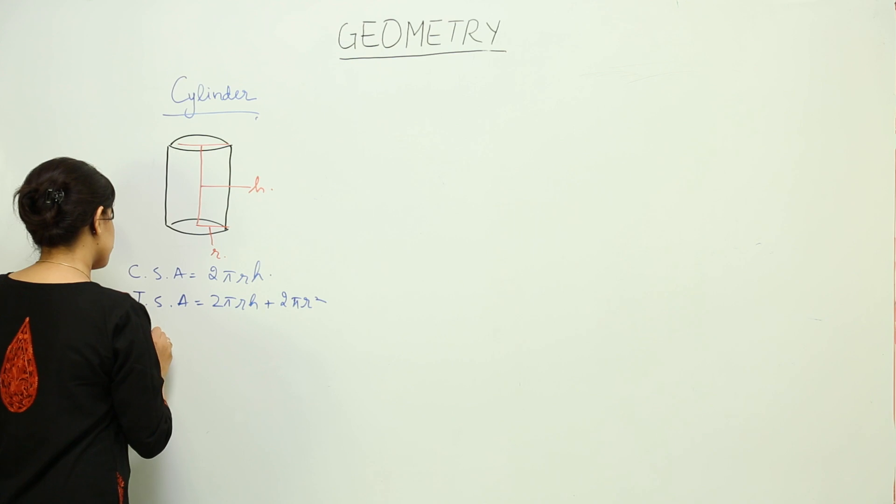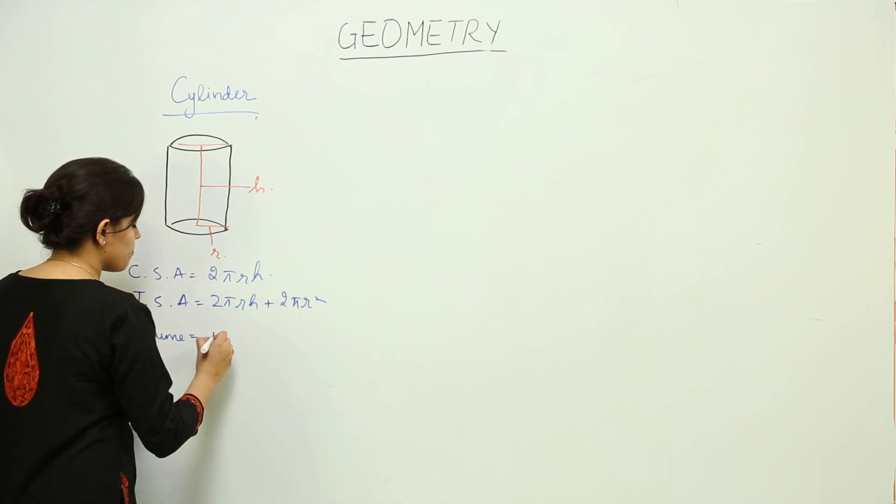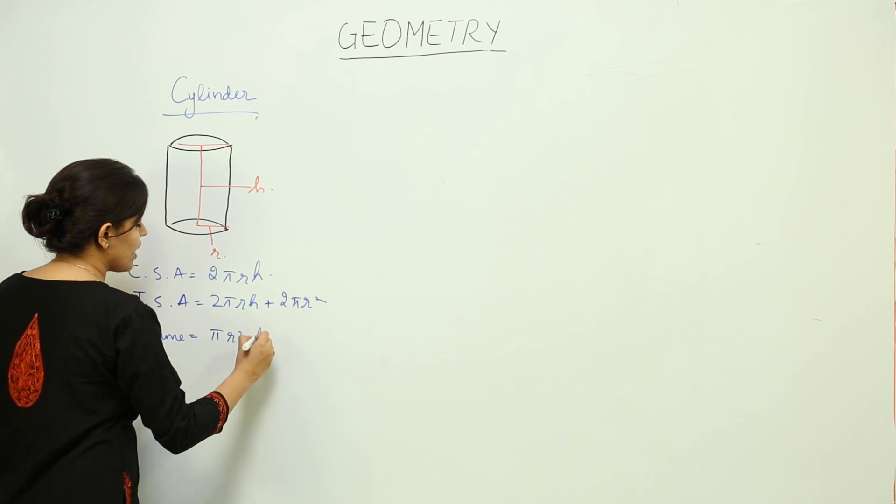Now, what is the volume? The volume of this cylinder is πr²h.